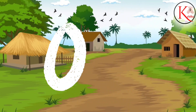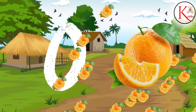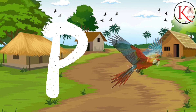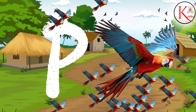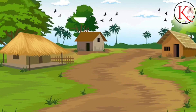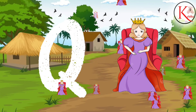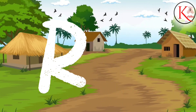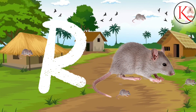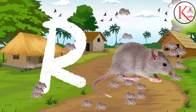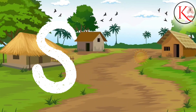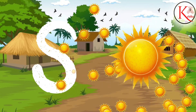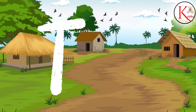O for Orange. P for Parrot. Q for Queen. R for Red. S for Sun.